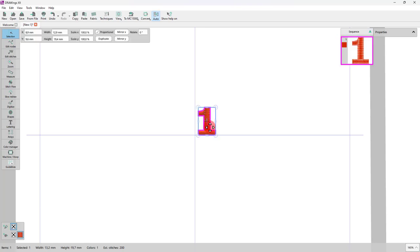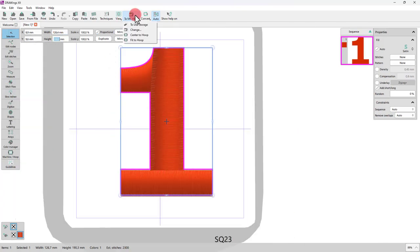Now select the created number. Make sure that Proportional is enabled and set its height to 190 mm. Center it to the hoop.